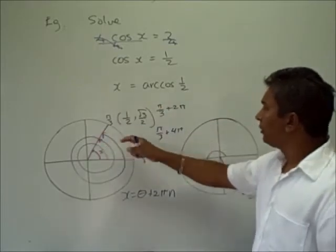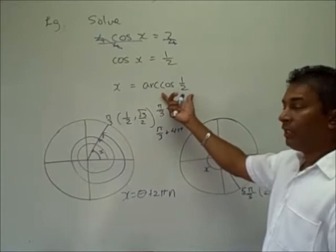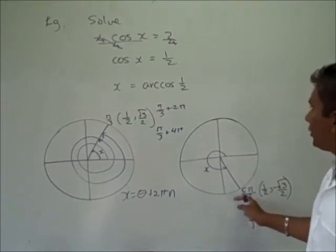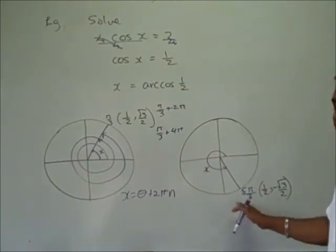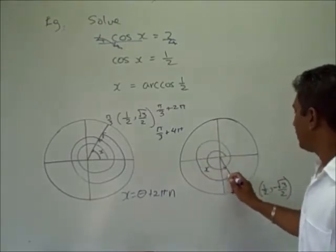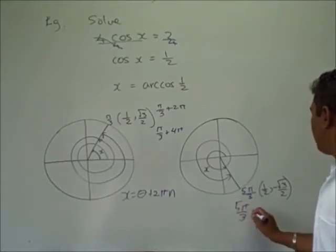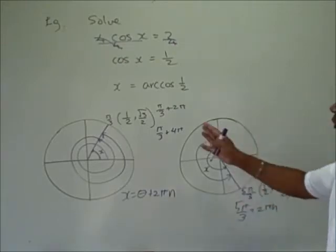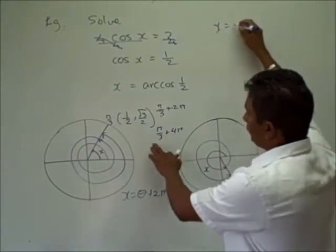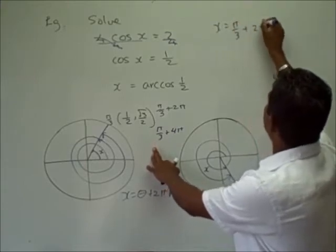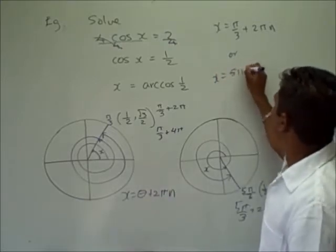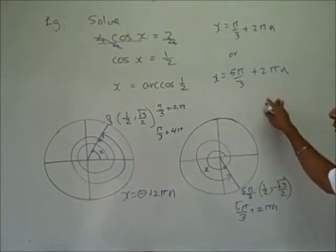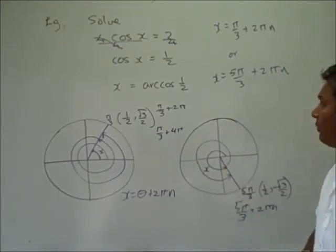Similarly, the arc cosine of 1 half is also in the fourth quadrant, because the cosine of 5 pi over 3 is equal to 1 half. So a second solution for this equation would be 5 pi over 3, and because we have infinite solutions, this becomes 5 pi over 3 plus 2 pi n. So our two solutions are x equals pi over 3 plus 2 pi n, or x equals 5 pi over 3 plus 2 pi n. This same scenario will also occur for our sine function, since it also has a period of 2 pi.